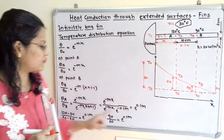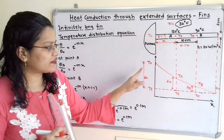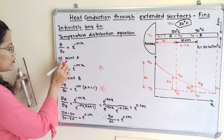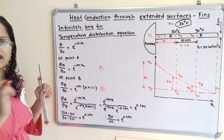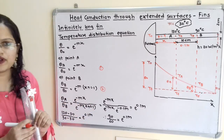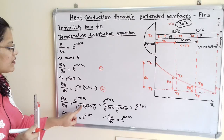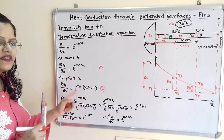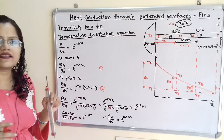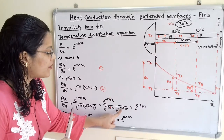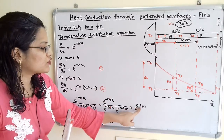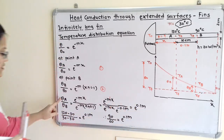Taking the ratio, theta_O cancels: theta_A / theta_B = e^(-mx) / e^(-m(x+0.1)). Expanding the denominator: e^(-mx) × e^(-0.1m). The e^(-mx) terms cancel, leaving 1 / e^(-0.1m) = e^(0.1m). So e^(0.1m) = theta_A / theta_B.